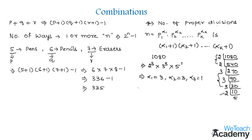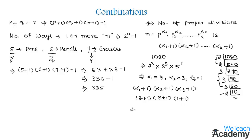Now substituting these values into the formula (alpha1+1)(alpha2+1)(alpha3+1), we get (3+1)(3+1)(1+1), which equals 4 into 4 into 2. Multiplying, 4 times 4 is 16, and 16 times 2 is 32. So there are 32 positive divisors of the number 1080.